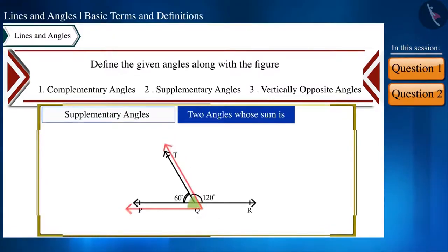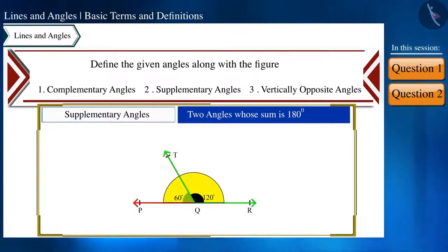Now, let's see the definition of supplementary angles. If we obtain the sum of two angles as 180 degrees, then we call such angles as supplementary angles.